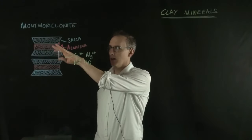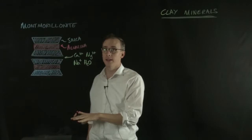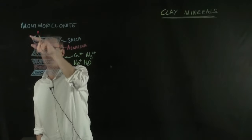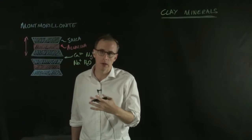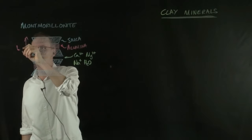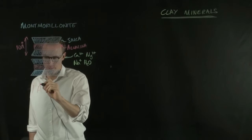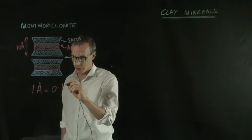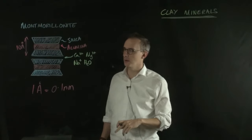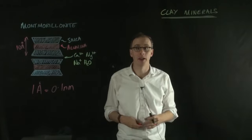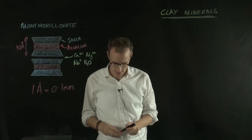Together, these six layers make up one crystal of clay. But the thickness of one of these three layers is around, let's say, 10 angstroms. Now, one angstrom is equal to 0.1 nanometers. So, each layer is probably about one nanometer, each set of layers is about one nanometer in thickness.